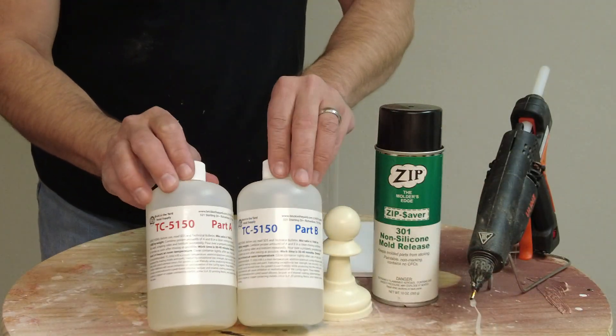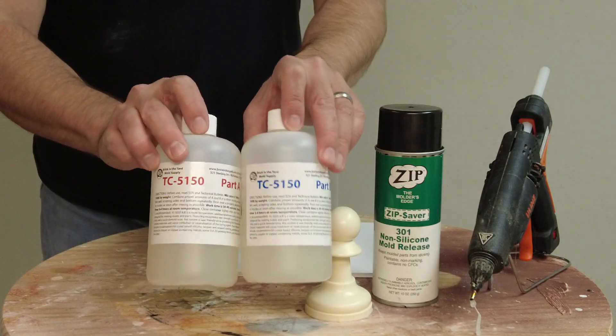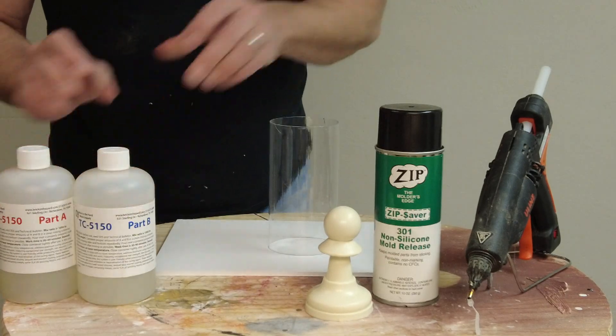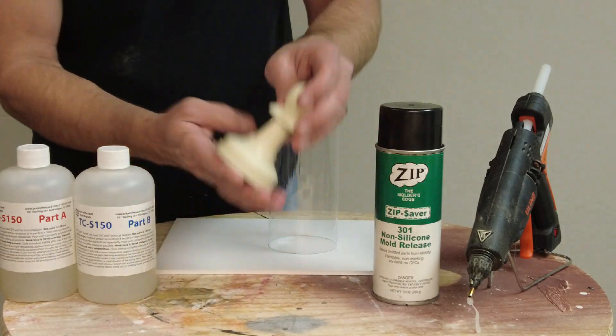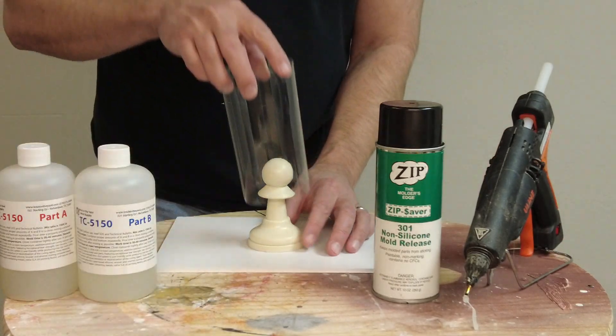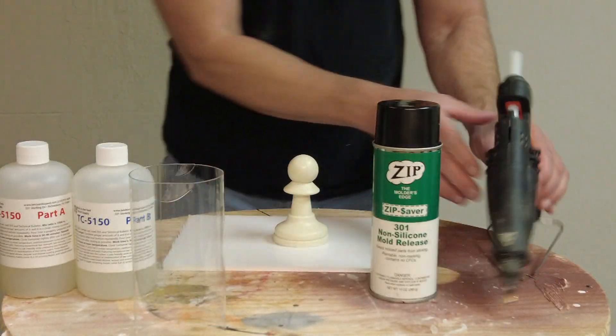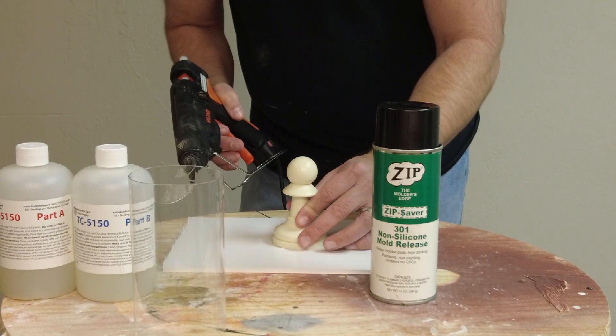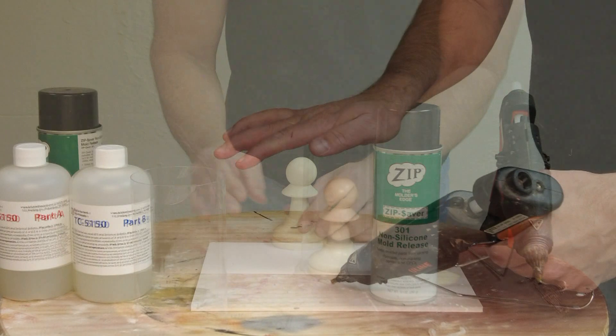To begin, 5150 is a one-to-one mix ratio 50 Shore A platinum silicone. What that means is we have to be very careful about potential contaminants. Anytime you're working with a platinum system, you want to make sure that your pattern and anything that comes in contact with it is not contaminated or won't contaminate the platinum. The best thing to do is mix up a small batch of silicone and put it on the pattern surface to test if it's going to inhibit the silicone.